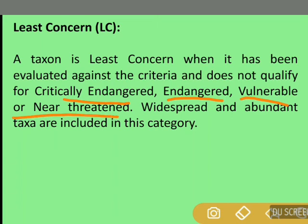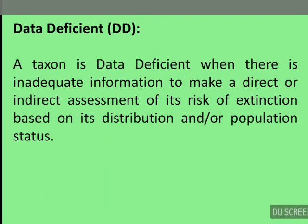Next is Data Deficient. A taxon is data deficient when there is inadequate information to make a direct or indirect assessment of its risk of extinction based on its distribution and/or population status.